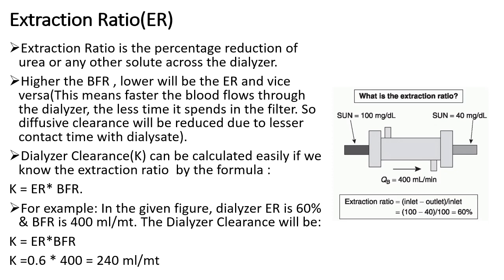In the given figure, the extraction ratio is 60% and blood flow rate is 400 ml per minute. Calculating dialyzer clearance as the product of extraction ratio and blood flow rate gives us 240 ml per minute — that is your dialyzer clearance.